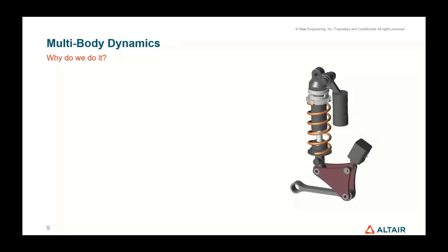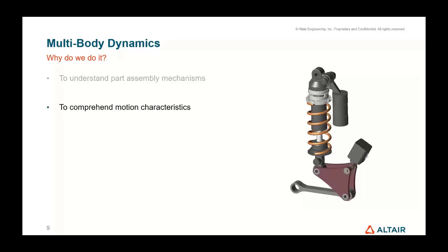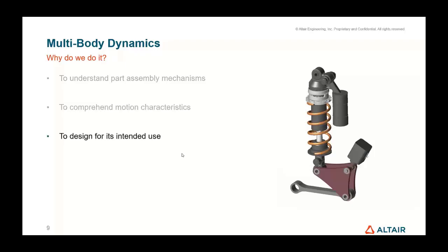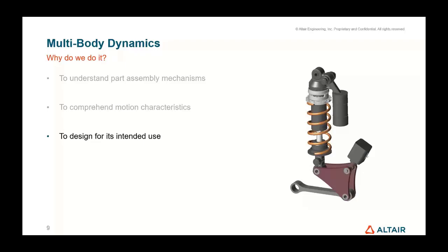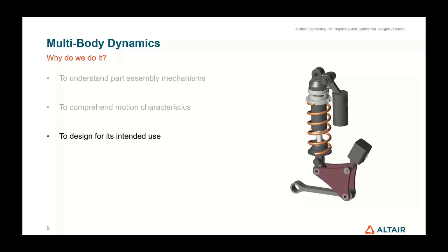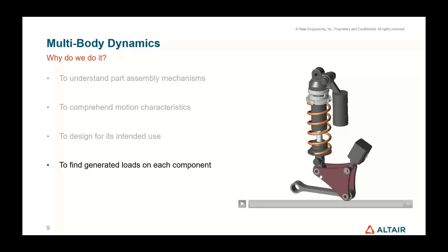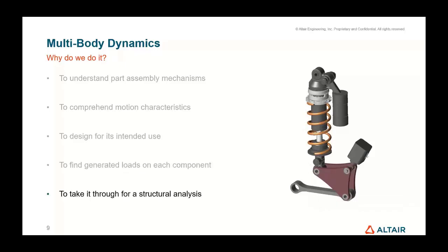Why do we want to look into multi-body dynamics? We want to understand different part assembly mechanisms and comprehend motion characteristics — for example, whether a spring is performing adequately for a suspension design. We want to design for intended use, ensure parts stay within packaging spaces, and make sure parts withstand how they're being used. We can also link spring-damper systems into Activate to simulate feedback loops and understand whether we need more damping, less damping, more or less stiffness. The generated loads on each component can then be taken through for structural analysis.